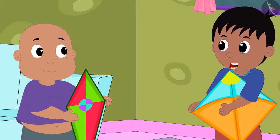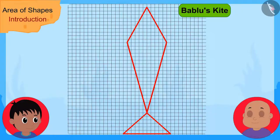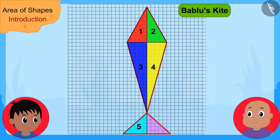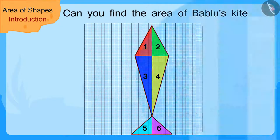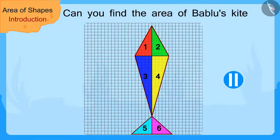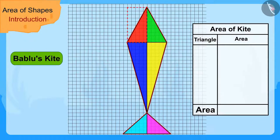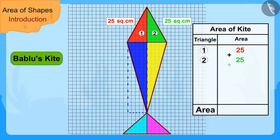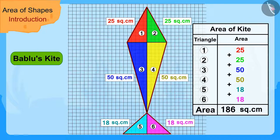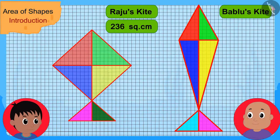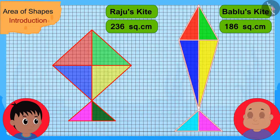Raju said, "Let me use it now to find the area of your kite," and drew a triangle in the outline of Bablu's kite. Children, can you find the area of Bablu's kite using the process you just learned? You may stop the video and find the answer. We can find the area of Bablu's kite in this way — Bablu's kite has an area of 186 square centimetres.